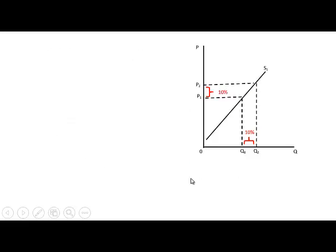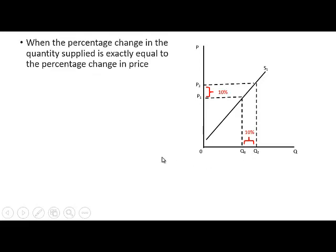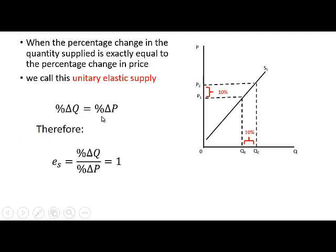The last scenario we look at is where the percentage change in price is exactly equal to the percentage change in quantity. When this is the situation we call it unitary elastic supply. The percentage change in quantity is exactly equal to the percentage change in price, and therefore price elasticity of supply is equal to 1.